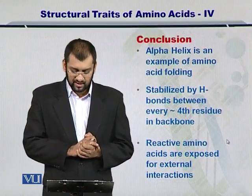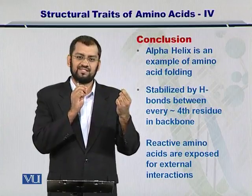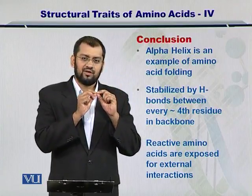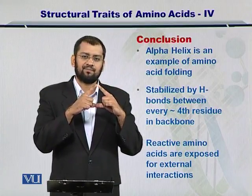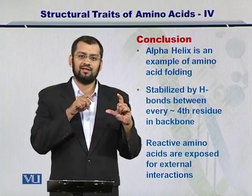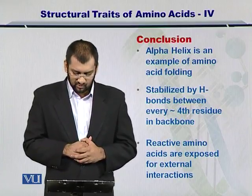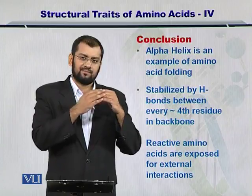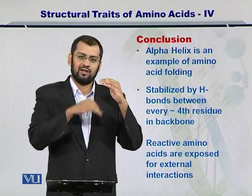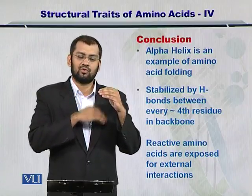So to conclude, the alpha helix is an example of the amino acids coming together within a single polypeptide chain, and this is stabilized by the formation of hydrogen bonds between nitrogen and oxygen, which holds this in place. Therefore you start seeing the alpha helix, which is similar to a spring that is there in our lives ubiquitously. Moreover, on the external surface of the alpha helix you may have active residues which are open for chemical interaction, while at the inside of the alpha helix you may have hydrophobic residues that are going to form the core of the protein.